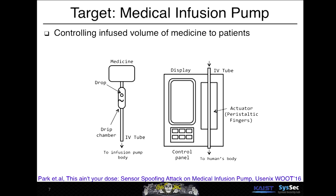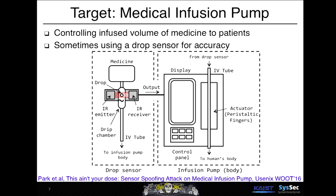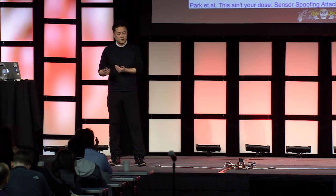By turning the green laser pointer on and off 100 times per minute, you can spoof it easily. If this does not look serious, let's look at the next example. The next target is a medical infusion pump with a drop sensor. In general, an infusion pump controls the infused volume using peristaltic fingers. However, to improve accuracy, people recommend using a drop sensor. The drop sensor consists of an IR emitter and IR receiver. The IR emitter continuously sends an infrared signal to the receiver, and when there's a drop, the light is scattered and there will be a voltage drop in the IR receiver.